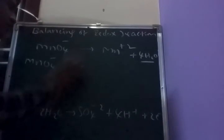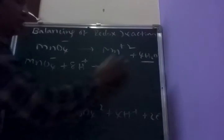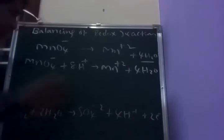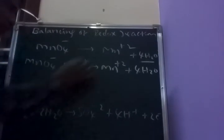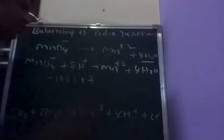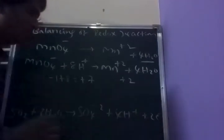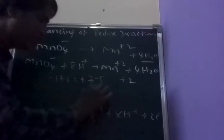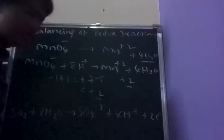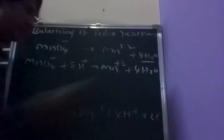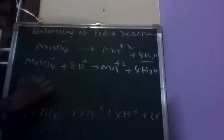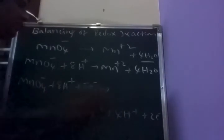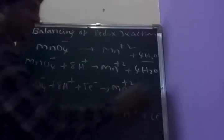MnO4⁻ plus 8H⁺ gives rise to Mn²⁺ plus 4H₂O. Next, balancing of charge: reactant side is minus 1 plus 8 equals plus 7 charge; product side is plus 2. We add 5 electrons to the reactant side: plus 7 minus 5 equals plus 2 — charge is balanced. So: MnO4⁻ plus 8H⁺ plus 5 electrons gives rise to Mn²⁺ plus 4H₂O.